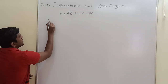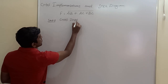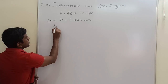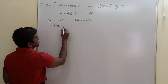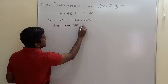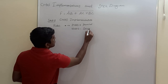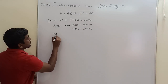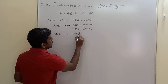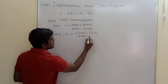Step 1: CMOS implementation. In this step, we will follow two rules. Rule number 1: when a dot operator is present in the Boolean expression, P-MOS transistors connect in parallel and N-MOS transistors connect in series. Rule number 2: when a plus operator is present in the Boolean expression, P-MOS transistors connect in series and N-MOS transistors connect in parallel.